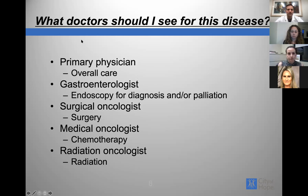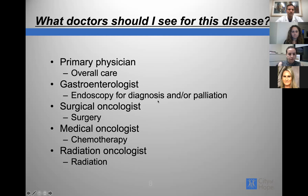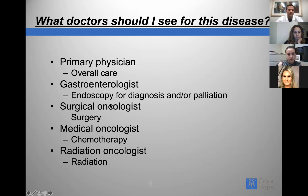What doctors should you see for this disease? It's important to maintain an ongoing relationship with your primary care doctor, who oversees your overall care. You may see a gastroenterologist to perform endoscopy — which can provide diagnosis, biopsy, and palliation of symptoms like blockage through drainage or a stent. You'll see a surgical oncologist to discuss surgery, a medical oncologist to discuss chemotherapy, and possibly a radiation oncologist. It's a multidisciplinary approach requiring all doctors to work together.